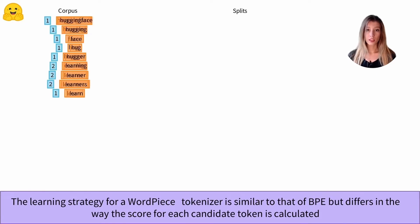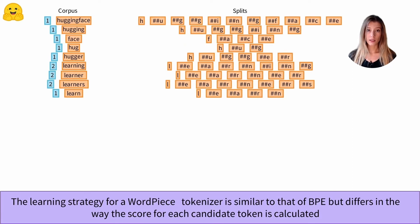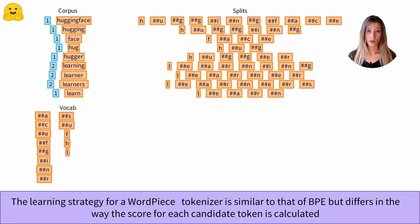To build the initial vocabulary, we divide each word in the training corpus into the sequence of letters that make it up. As you can see, there is a small subtlety: we add two hashtags in front of the letters that do not start words. By keeping only one occurrence per elementary unit, we now have our initial vocabulary.